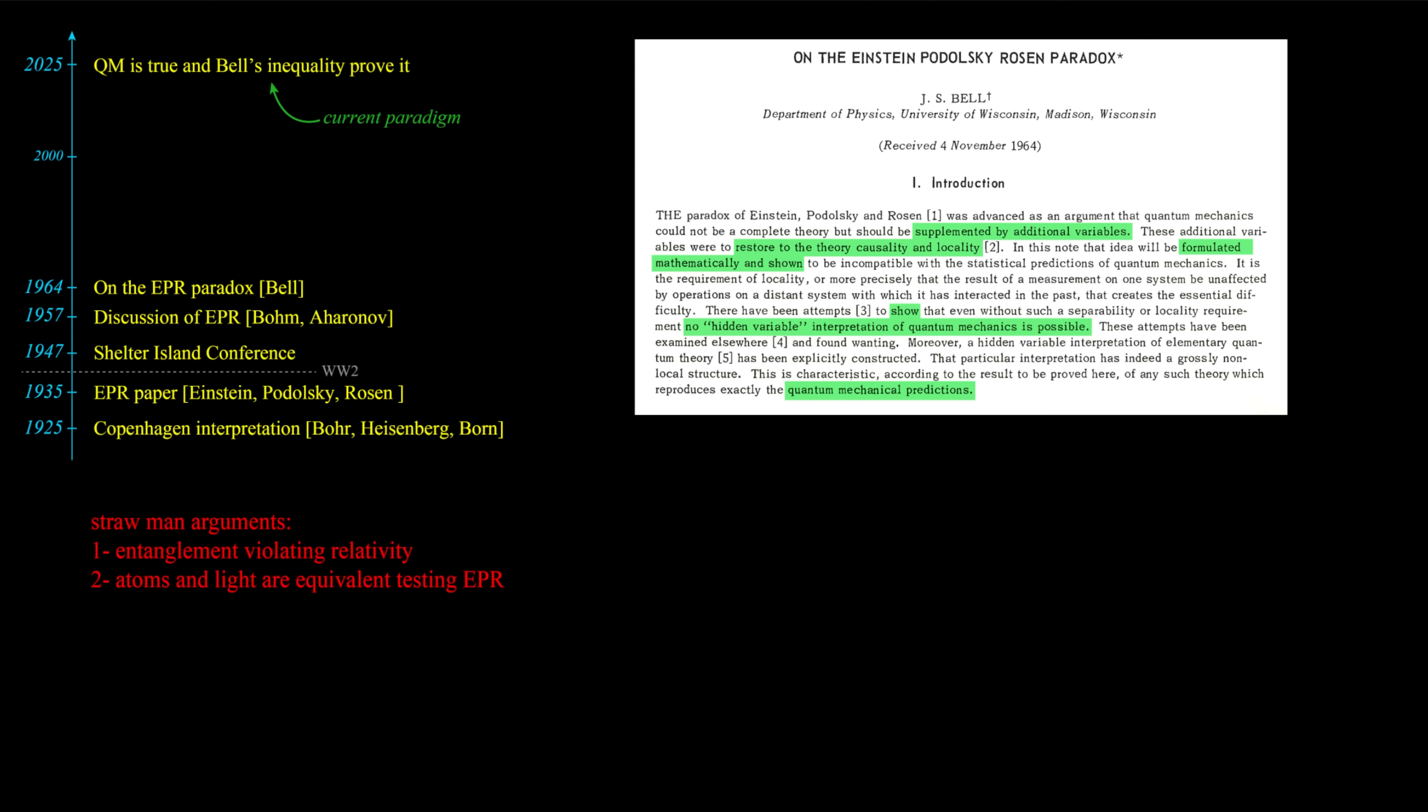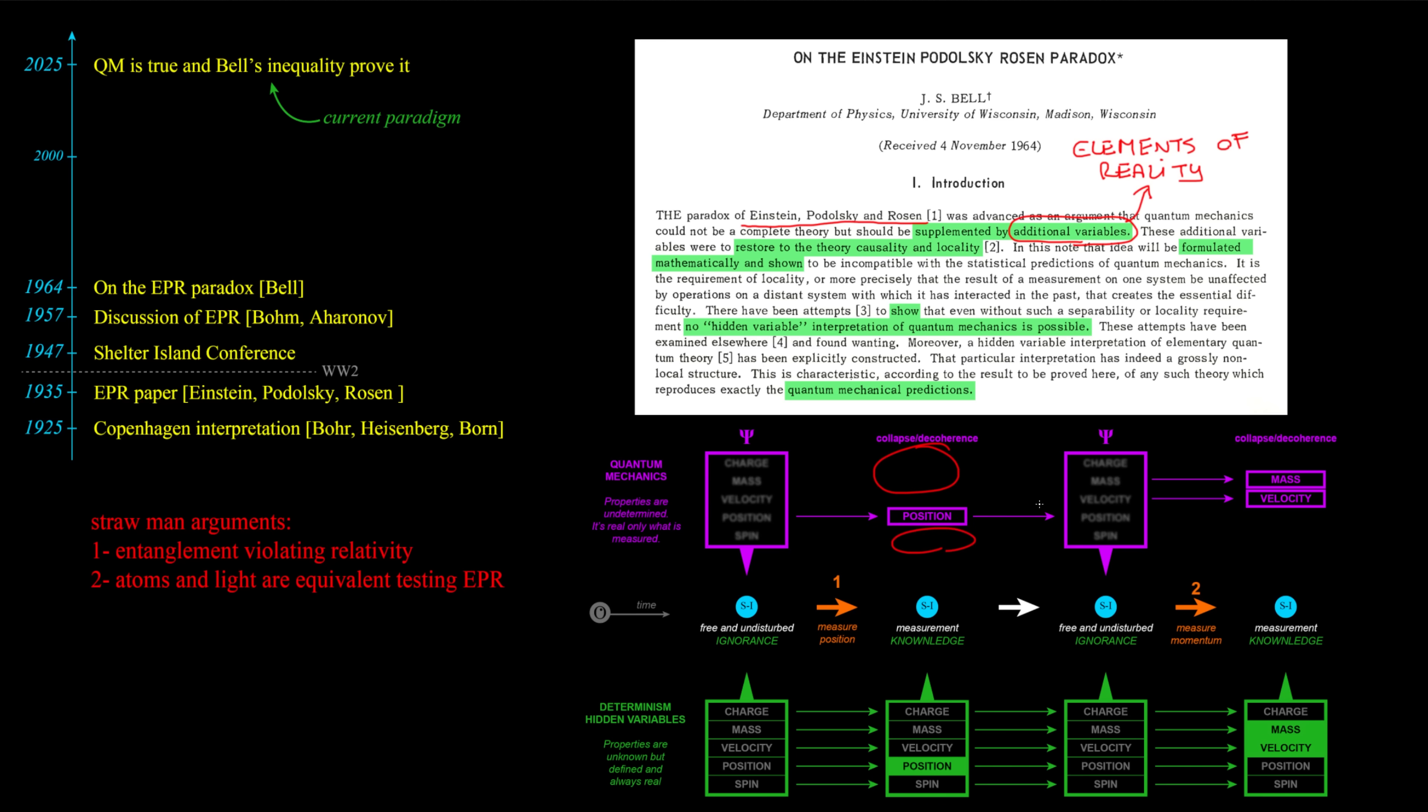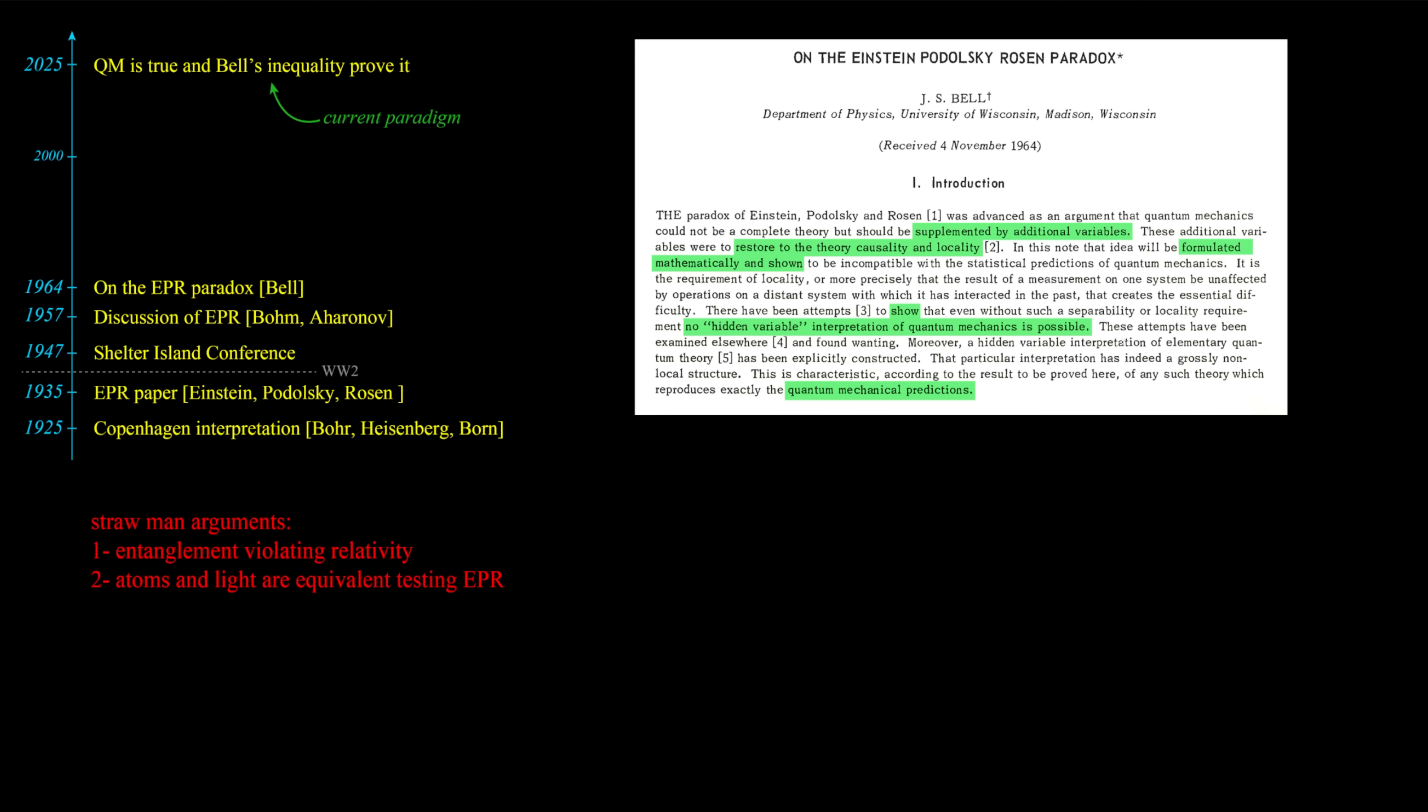Bell published its paper about inequality in 1964, building on Aronov and Bohm. Additional variables of EPR are the elements of reality that shouldn't disappear or reappear out of nowhere. Also here Bell claims no hidden variable interpretation of quantum mechanics is possible, but determinism with hidden variables is used to understand physics and experimental results, is not meant to make sense of quantum mechanics.